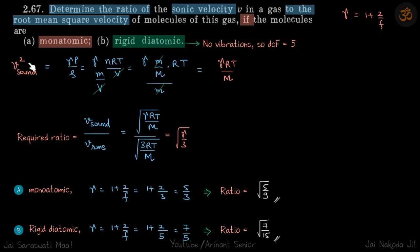We know that velocity of sound, that's what sonic velocity is, is given as sqrt(gamma RT by M). And to put the value of gamma we need this information whether the gas is monoatomic or rigid diatomic.